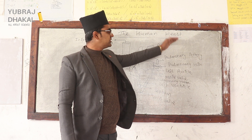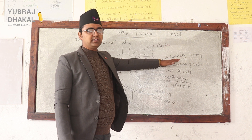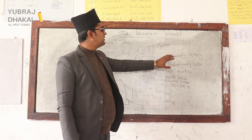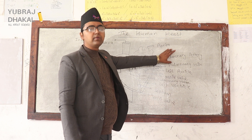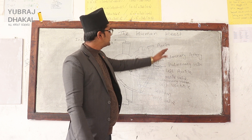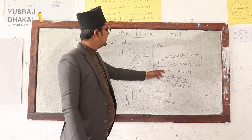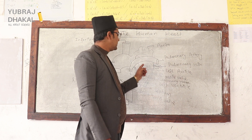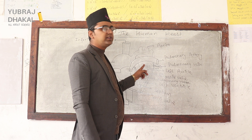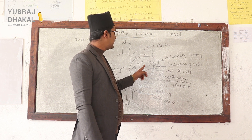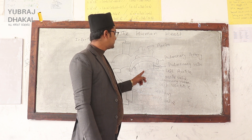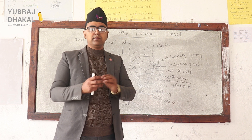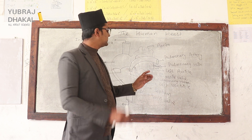This is pure blood — oxygenated blood. This oxygenated blood is very important. It is carried through the pulmonary vein to the left auricle.